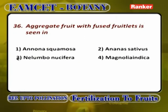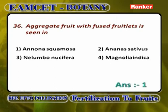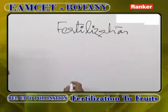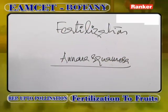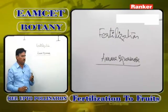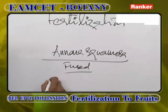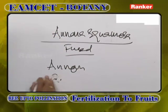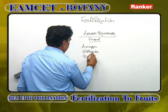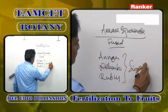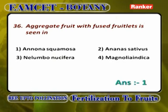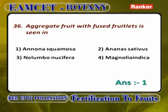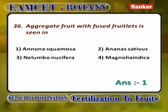Aggregate fruit with fused fruitlets. Aggregate fruit is formed from multicarpellary apocarpous ovary. In Annona squamosa (custard apple), the aggregate fruit appears like a simple fruit because all fruitlets are covered by one common pericarp. Among the options Ananas sativa (pineapple) is a compound sorosus fruit; Nelumbo nucifera and Magnolia indica show aggregate fruits where fused fruitlets are not seen. Answer: Annona squamosa.